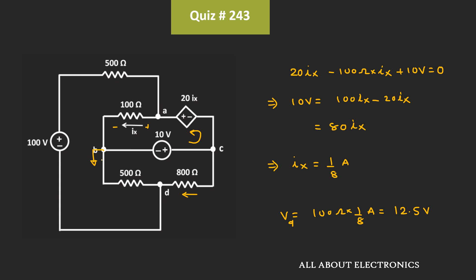Now as we have considered node B as the reference node, we can say that the voltage Vc is equal to 10V. And of course, over here, this voltage Vb is equal to 0V. So by considering node B as the reference node, we already know the value of voltages Va, Vb, and Vc.